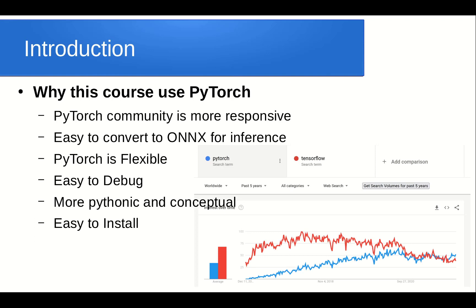Why does this course use PyTorch? The PyTorch community is more responsive than TensorFlow. PyTorch is easy to convert to ONNX (Open Neural Network Exchange) for inference. After converting to ONNX, you can use the model in any framework, any language — including C++ — or on any system of your choice. PyTorch is more flexible, more Pythonic, easier to debug, and easier to install compared to TensorFlow, which requires figuring out exact CUDA version compatibility.